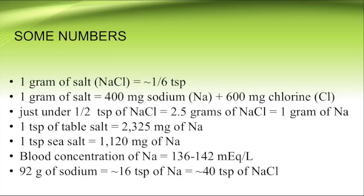So if we want to talk about salt or sodium, we need to be really clear as to whether we're talking about sodium or sodium chloride. Let's consider some numbers. One gram is the same thing as 1,000 milligrams, and one gram of salt is the equivalent of about one-sixth of a teaspoon of sodium chloride. Just under half a teaspoon of salt will provide you with 2.5 grams of salt, which contains one gram of sodium. One teaspoon of fine table salt contains about 2,325 milligrams of sodium, while the coarser sea salt has 1,120 milligrams of sodium.